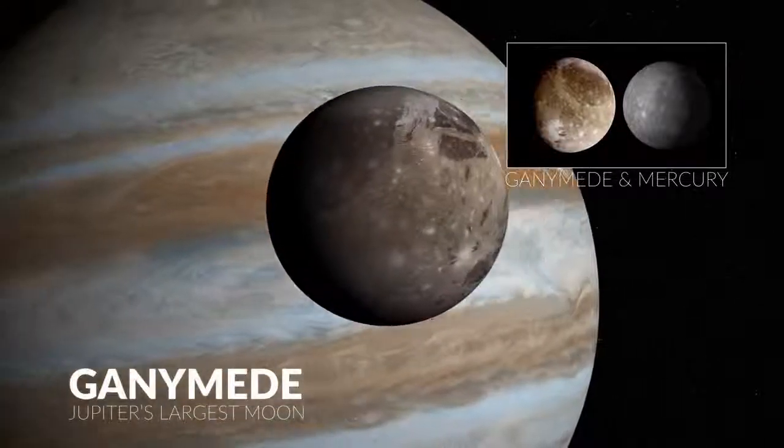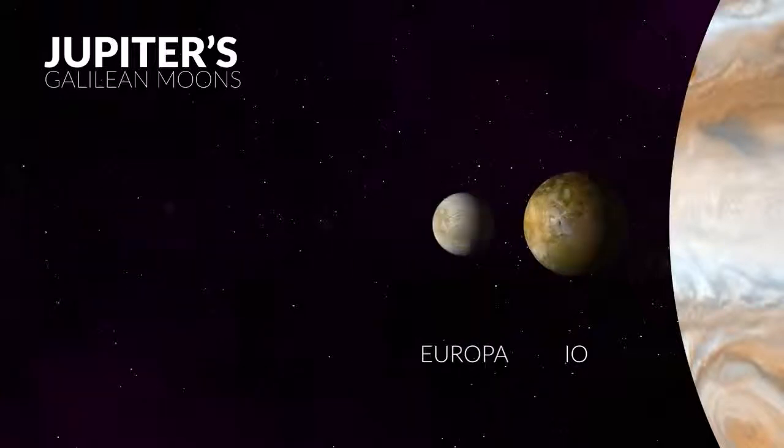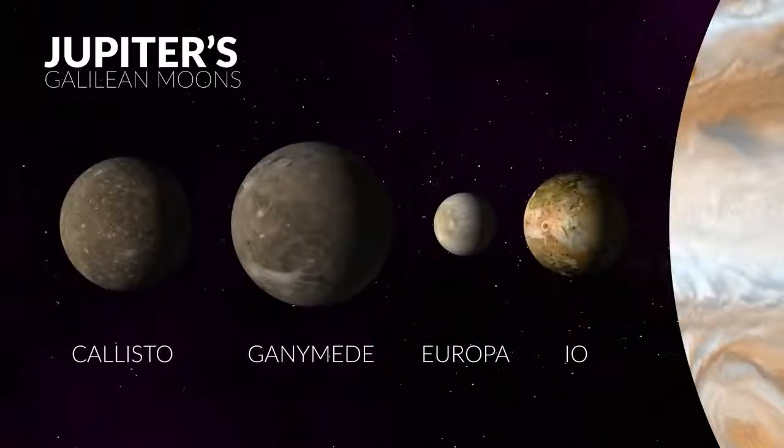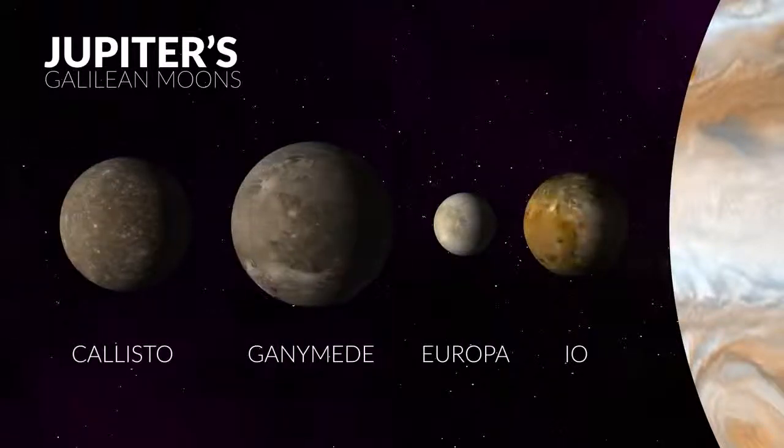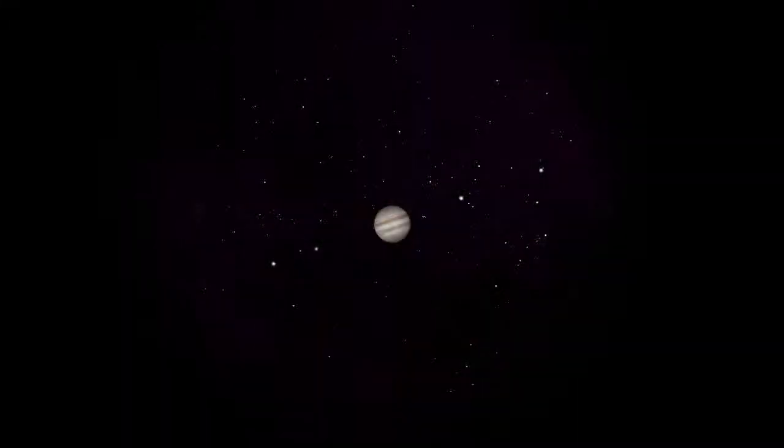Of all of Jupiter's moons, the most well-known are the four Galilean moons: Io, Europa, Ganymede, and Callisto. These four moons are Jupiter's largest and even big enough to be visible in backyard telescopes.